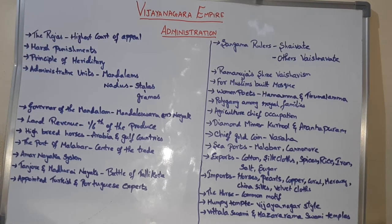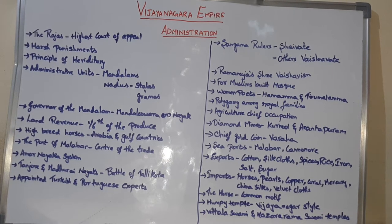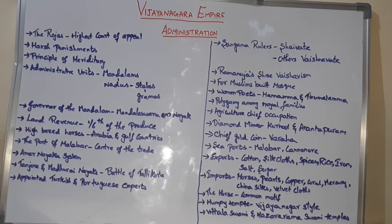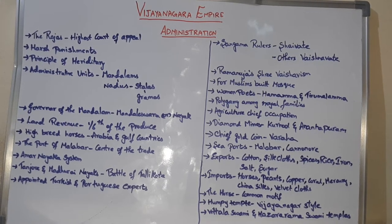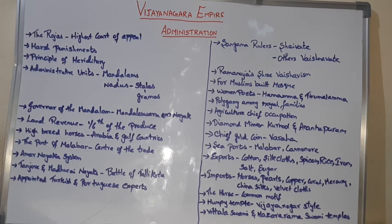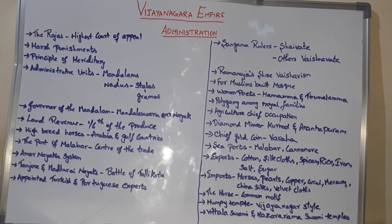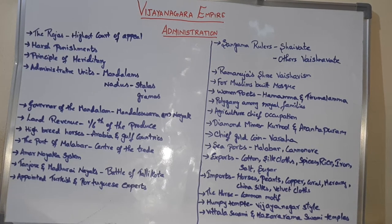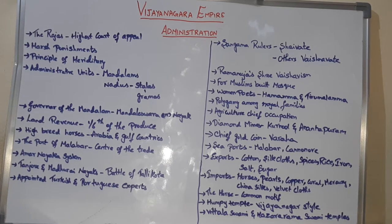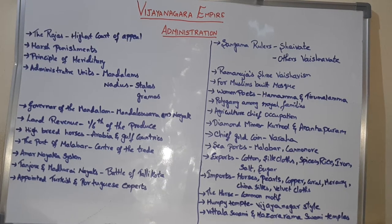The governors of the provinces were royal princes and nobles, and sometimes they issued their own coins. Each governor paid a fixed contribution in both men — meaning soldiers — and money. Besides land revenue, there were tributes and gifts from vassals and feudatory chiefs, customs collected at the ports, and taxes on various professions.